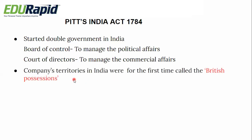The Pitt's India Act also stated that the company's territories in India were for the first time called 'British possessions.' This is a very important point. Until 1784, the Britishers never officially claimed the company's territories in India as under their control. This was the first time they called it British possessions, meaning they were officially acquiring territories in India.